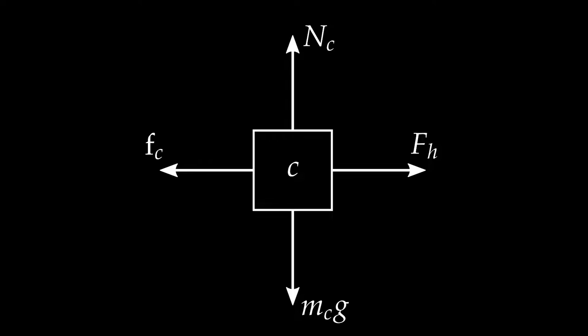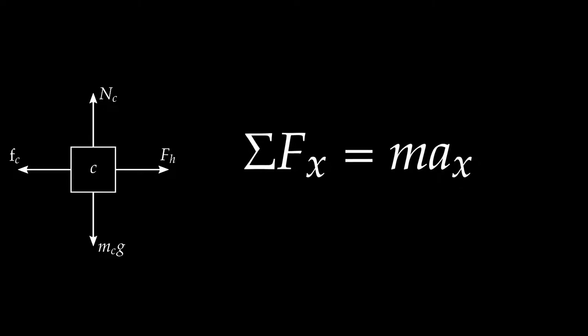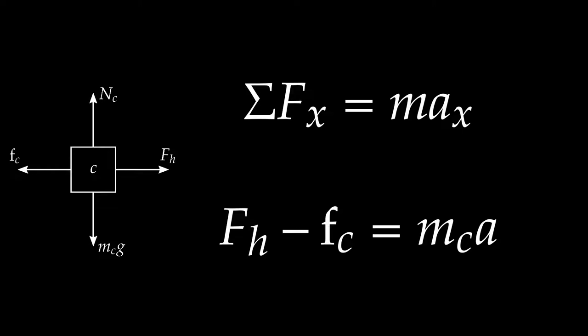The horizontal forces are where things get interesting. For the cart, applying Newton's second law with right as positive and considering only horizontal forces: the force of the horse FH is positive, the friction force on the cart fC is negative. So FH minus fC equals mC times acceleration. This is the equation of motion describing the cart's behavior for all states of motion.